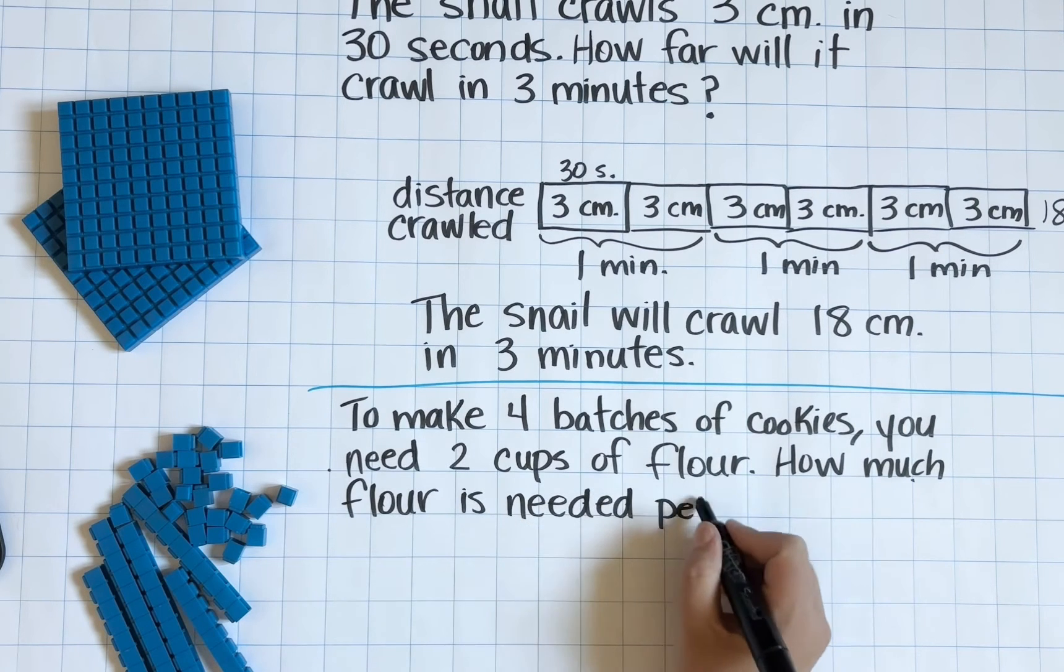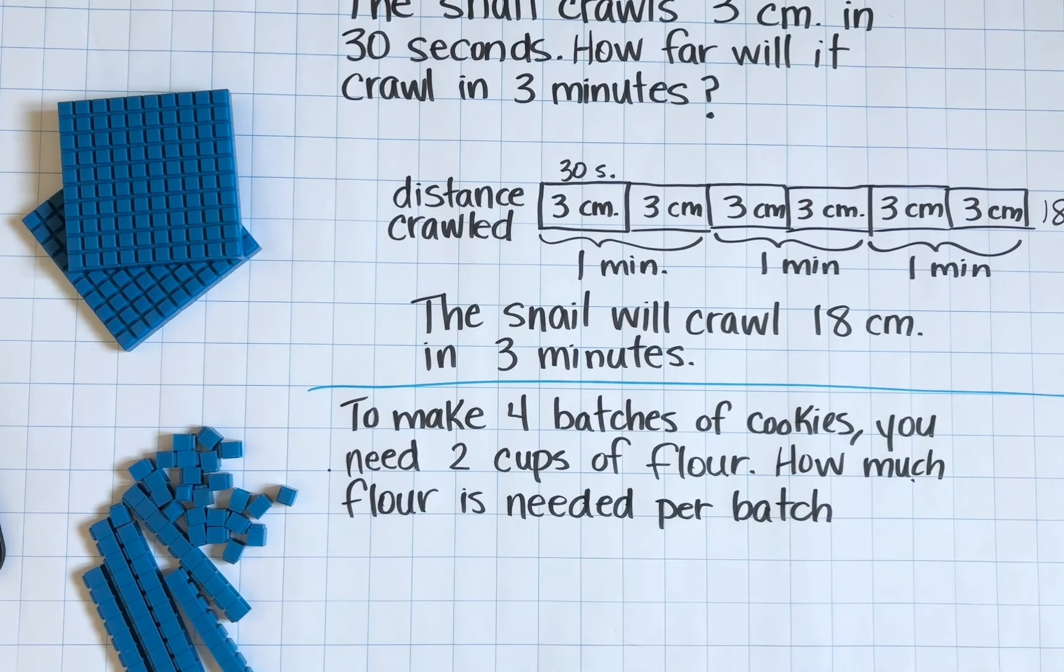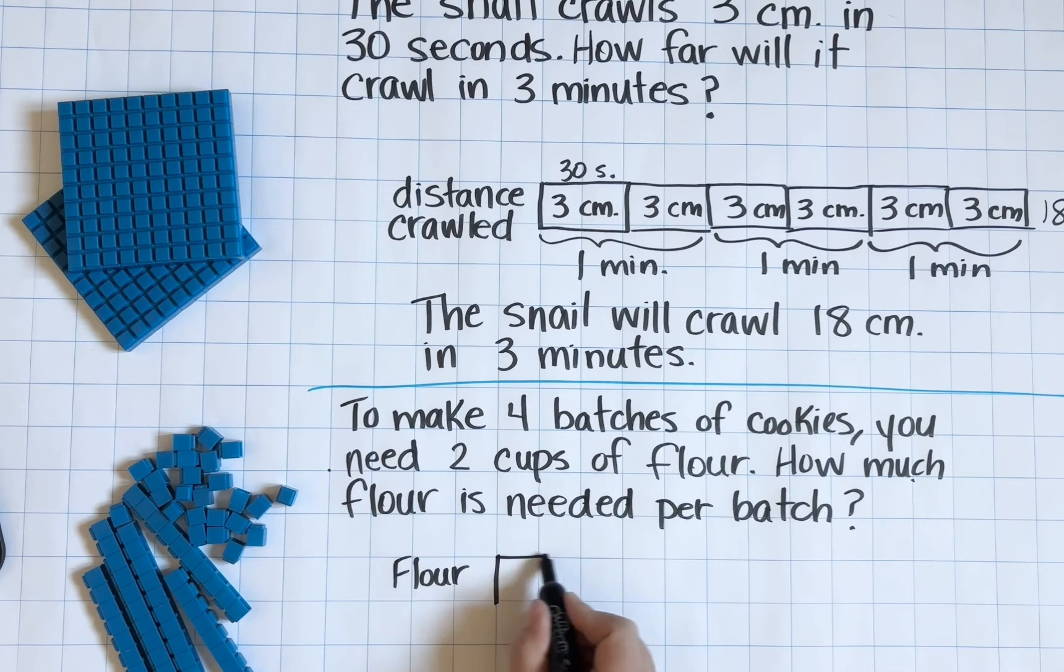Now we could go directly to abstract learning with digits and symbols, but we know we are creating gaps in our students understanding when we do that. So instead let's give them the opportunity to use manipulatives to make sense of the word problem.